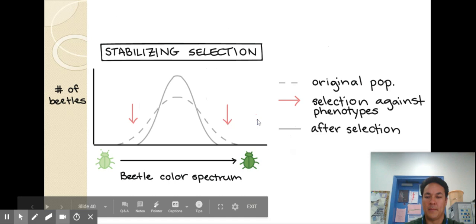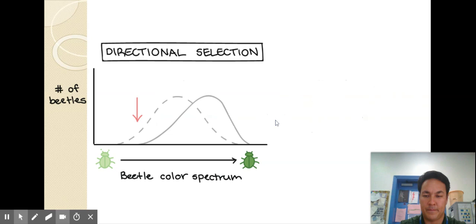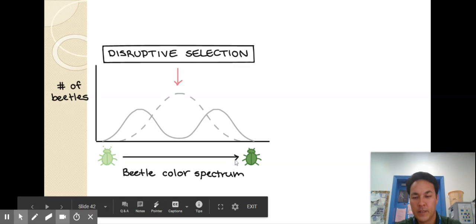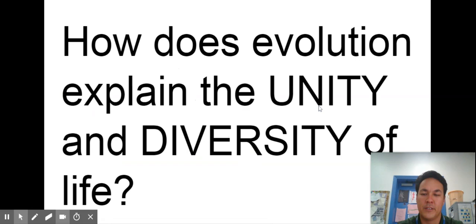Here's from Khan Academy this is an example of beetle colors so let's see I'm sorry stabilizing selection is best to be this color in the middle directional selection best to be dark disruptive selection best to be either light or dark. And so we can see these and remember that different modes of selection will happen as the environment changes.